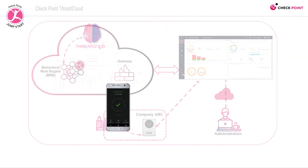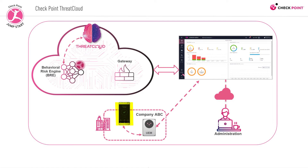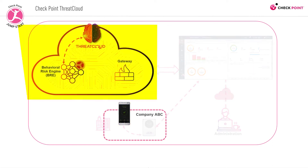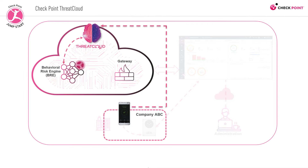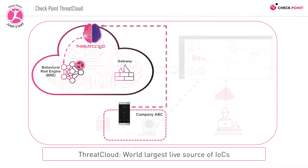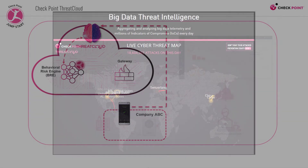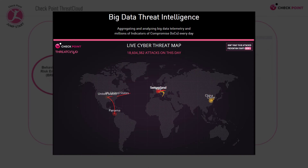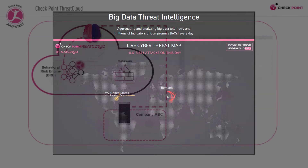While some of the analysis is done on the device itself, resource-intensive analysis is performed in the Checkpoint cloud. Anonymized data is sent from the app to Checkpoint's Threat Cloud, which is the world's largest live source of indicators of compromise. Threat Cloud incorporates real-time threat intelligence from hundreds of thousands of Checkpoint gateways and from millions of endpoints across the globe.